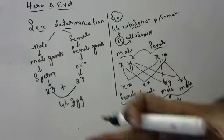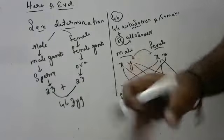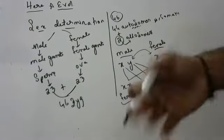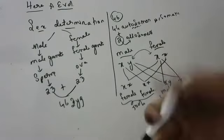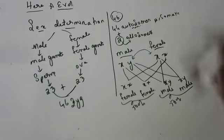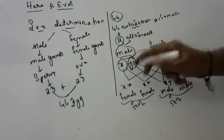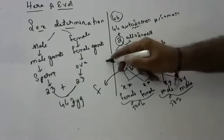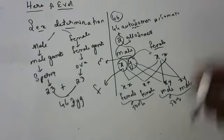No one on this earth can tell whether the baby will be male or female before fertilization. After becoming pregnant, around the third or fourth month we can tell the sex. It depends on whether X or Y comes from the male — if X comes, compulsorily female; if Y comes, compulsorily male.